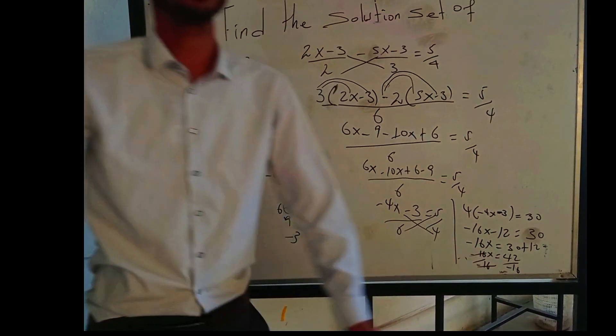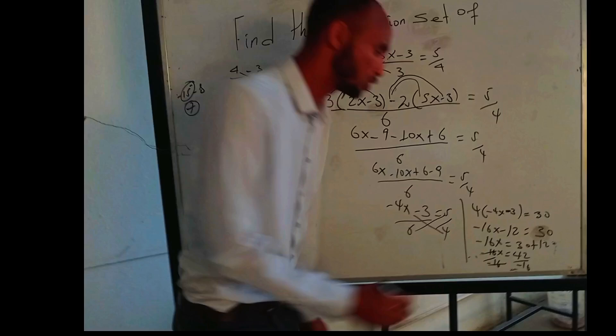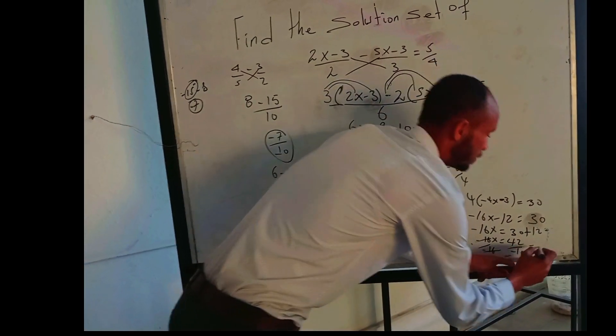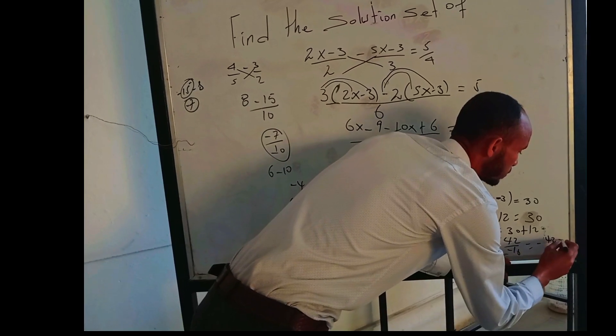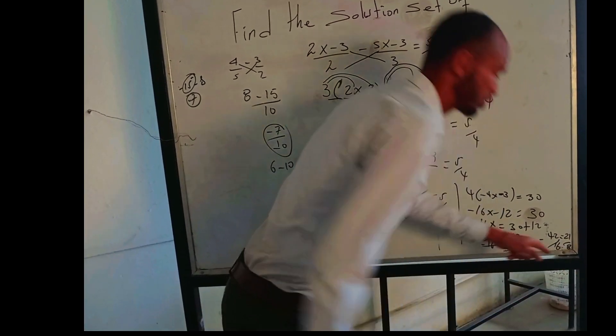Now divide both sides by -16. x is equal to -42/16.